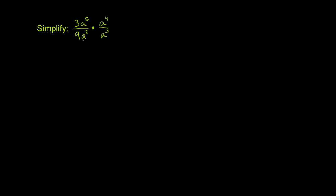Simplify 3a to the fifth over 9a squared times a to the fourth over a to the third. Before we even worry about the a's, we can simplify the 3 and the 9 — they're both divisible by 3. So let's divide the numerator and the denominator by 3.